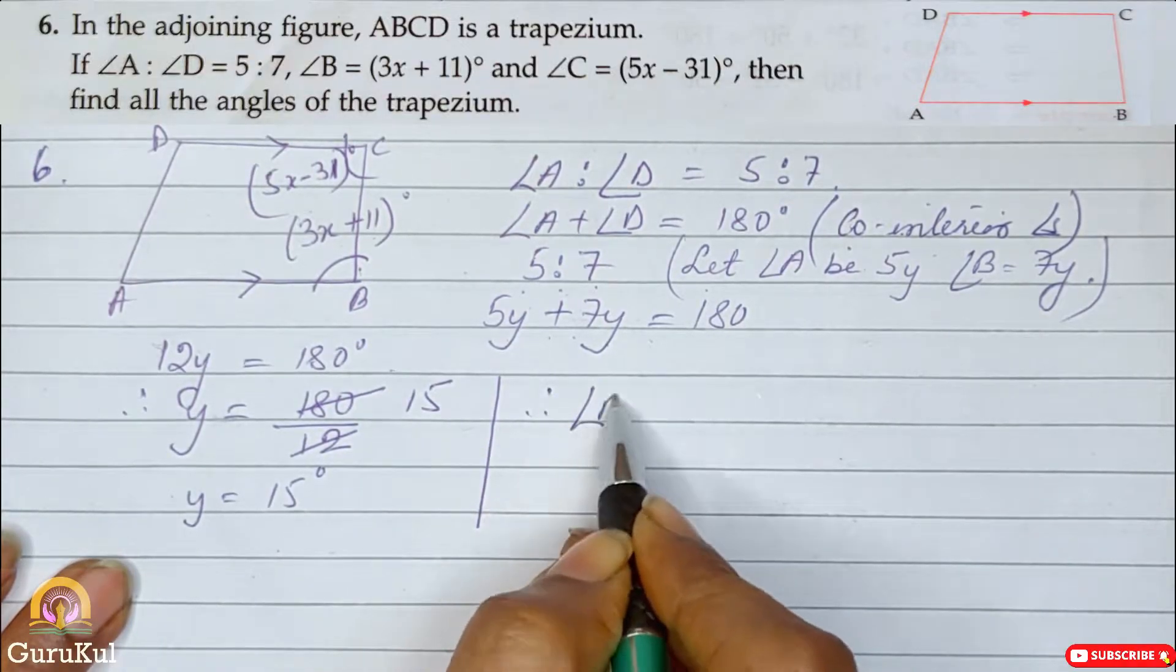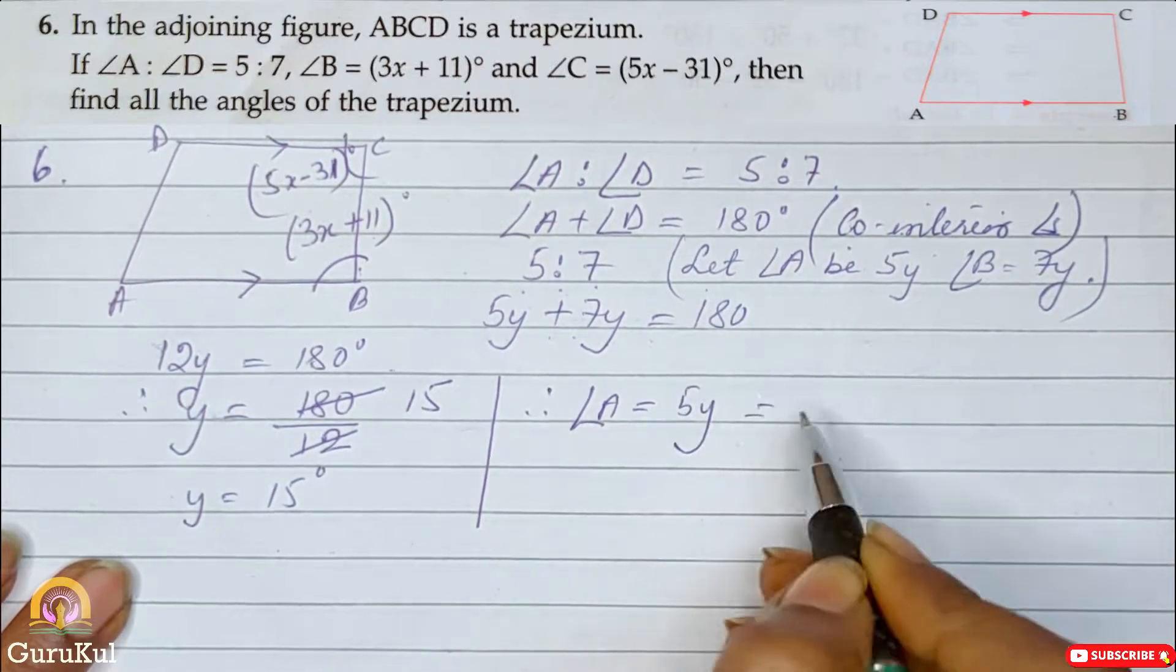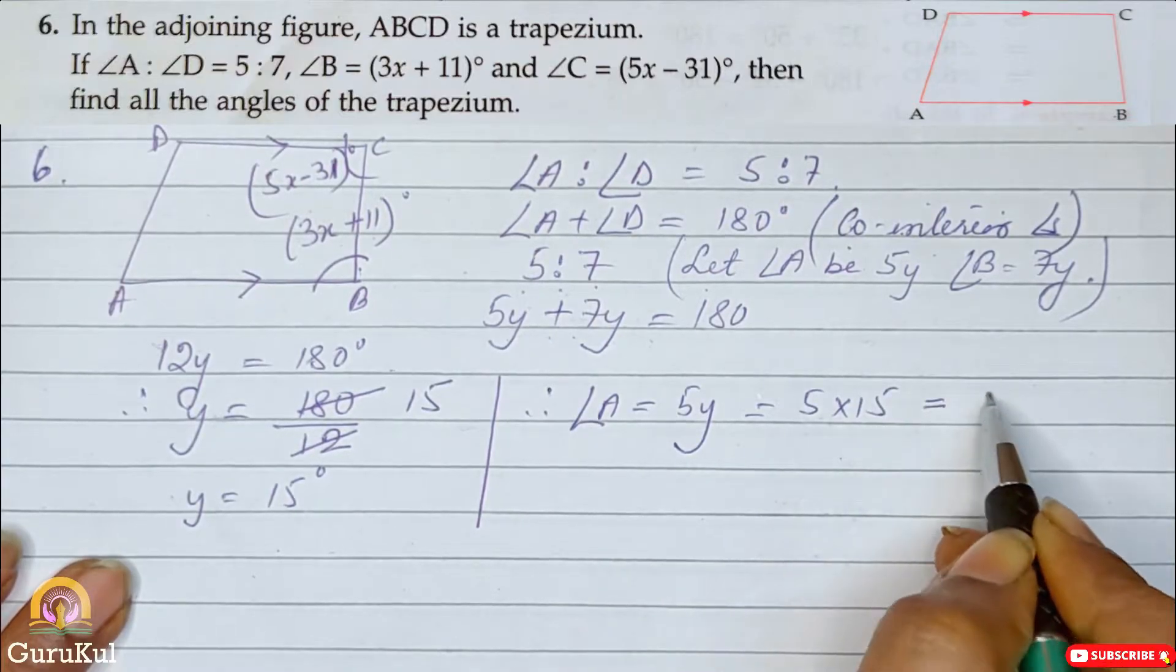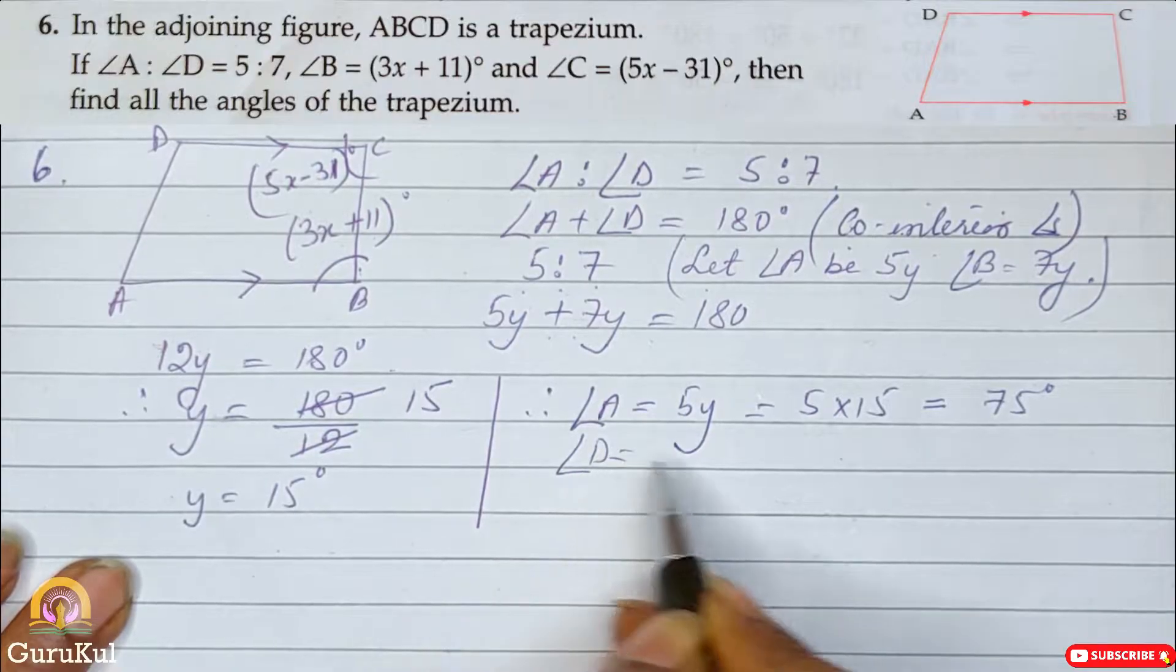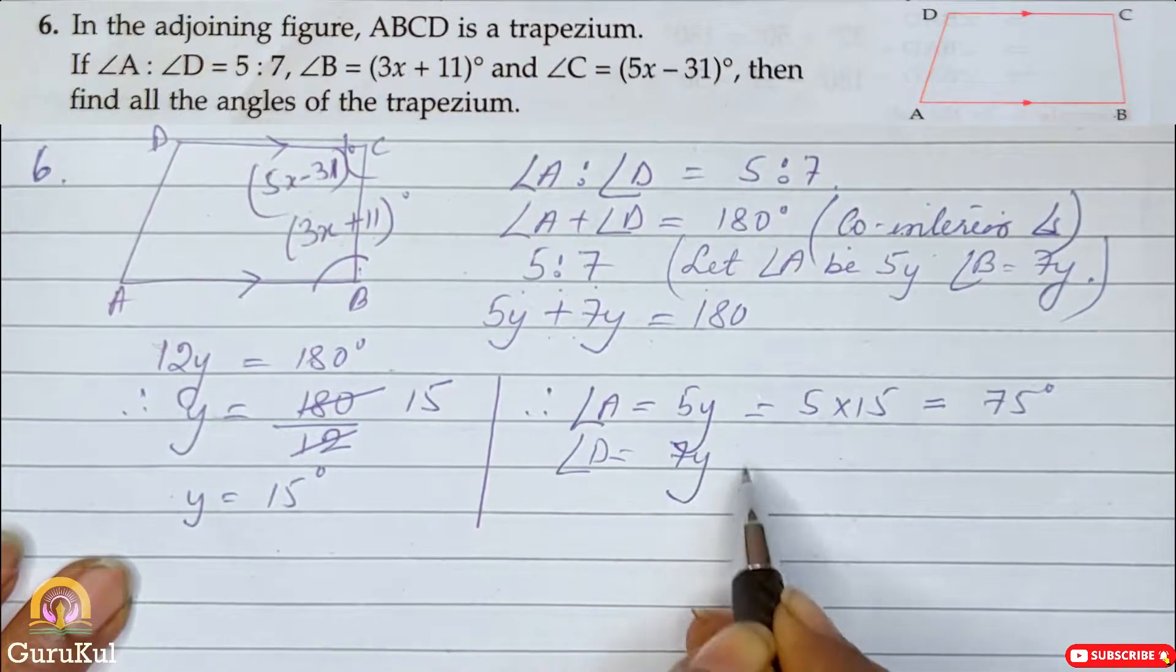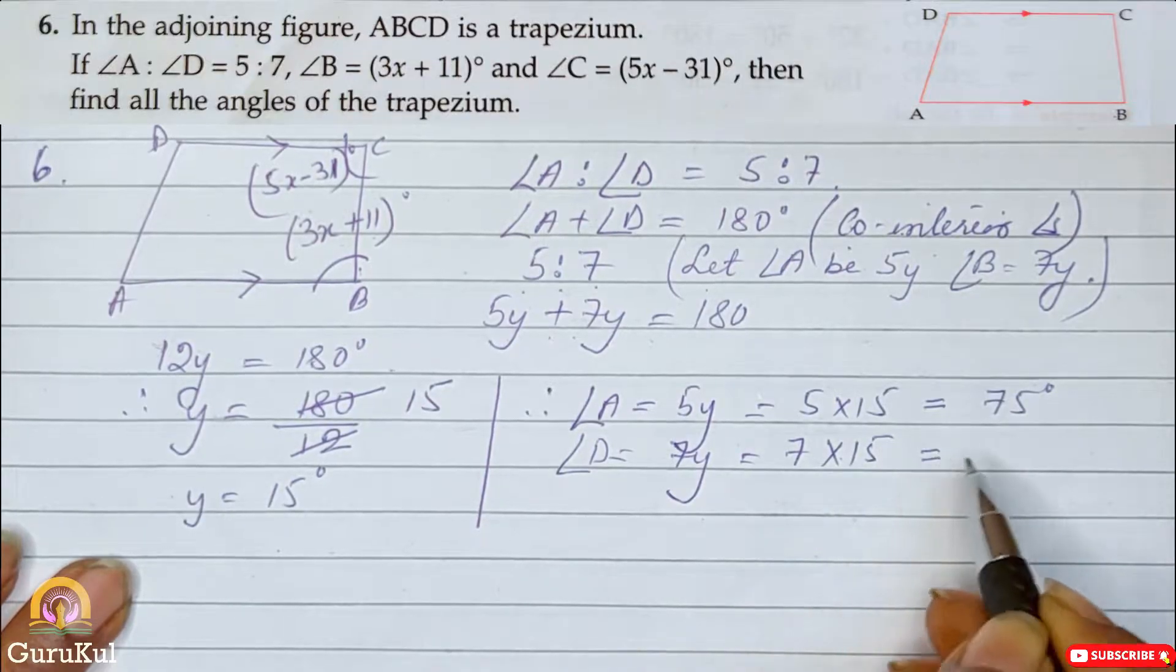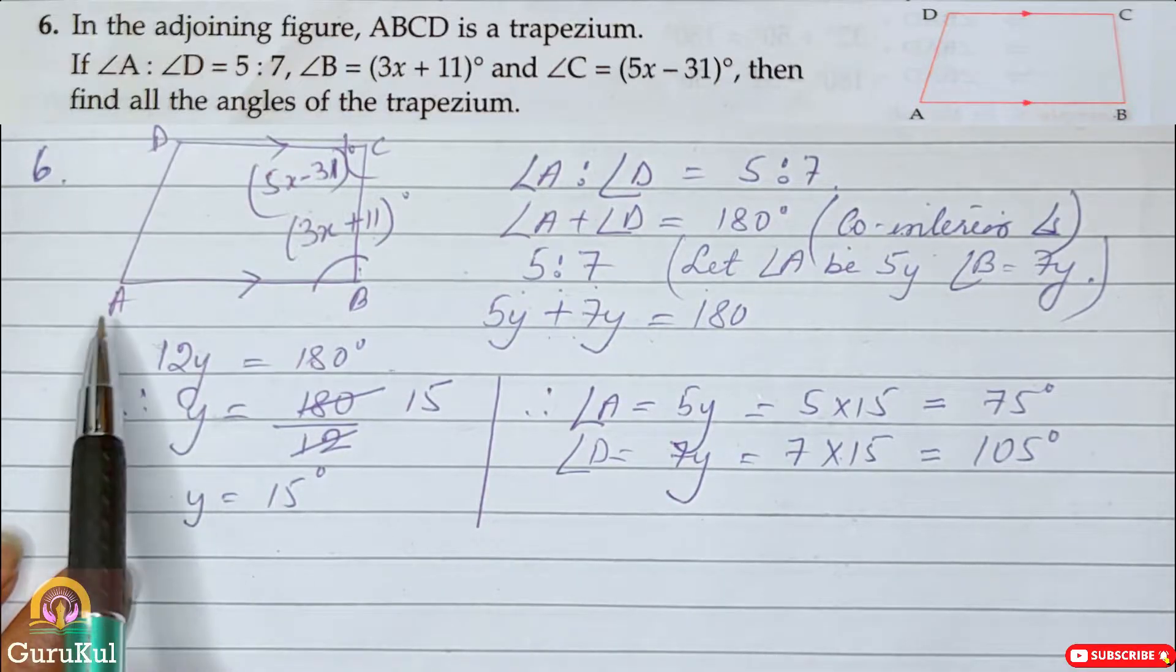Therefore, angle A which is equal to 5y is equal to 5 into 15, that gives us 75 degree. And angle D which is 7y is equal to 7 into 15, that gives us 105 degree. So we got angle A and angle D value.